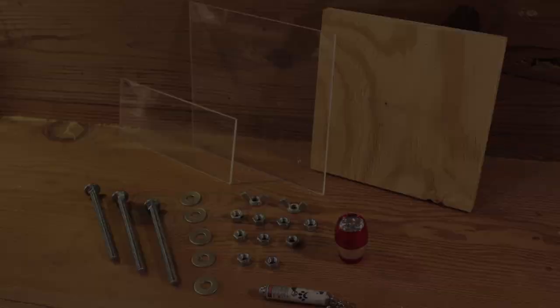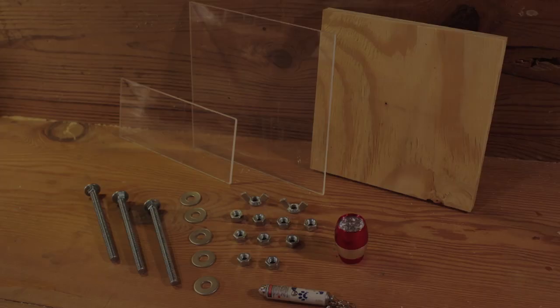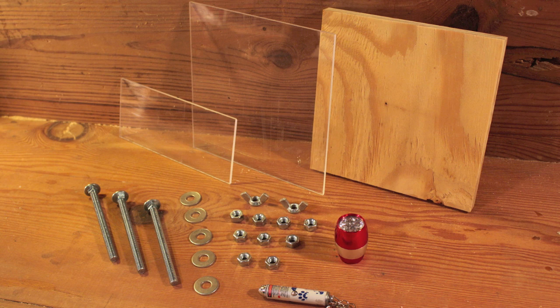You will need a cheap laser pointer, some 1⁄8 inch plexiglass, plywood, a few nuts, bolts, and washers. A small LED light is also useful for backlighting cell samples. The only tools you will need are a drill and a few assorted bits. Pliers might come in handy too.